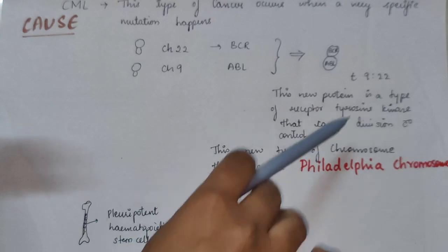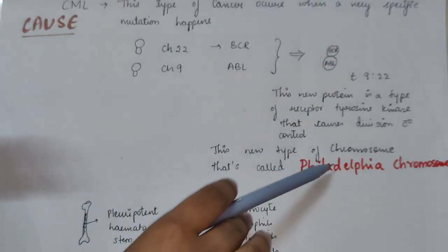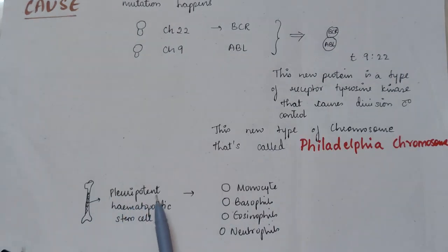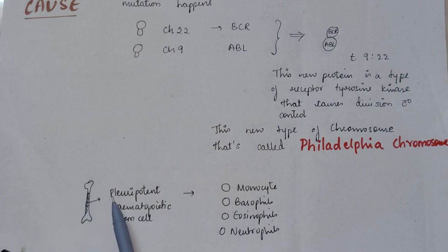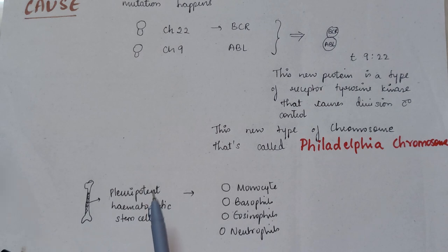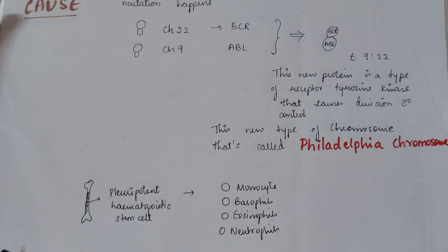This new type of chromosome that is formed is called the Philadelphia chromosome. There is a pluripotent hematopoietic stem cell in the bone marrow, which leads to the formation of many other types of cells such as monocytes, basophils, eosinophils, neutrophils, erythrocytes, platelets, and many others. But these leukocytes are present in excess numbers in chronic myeloid leukemia.